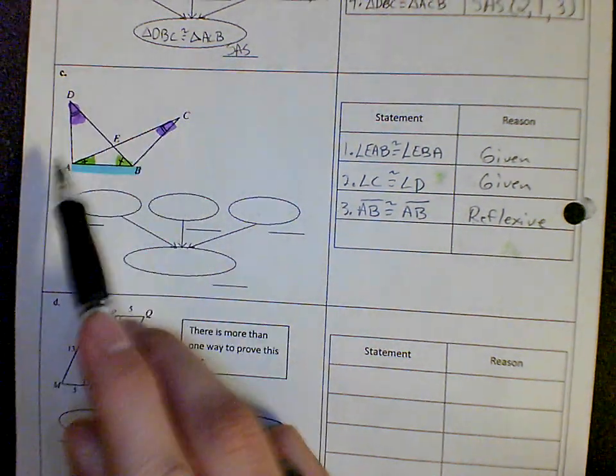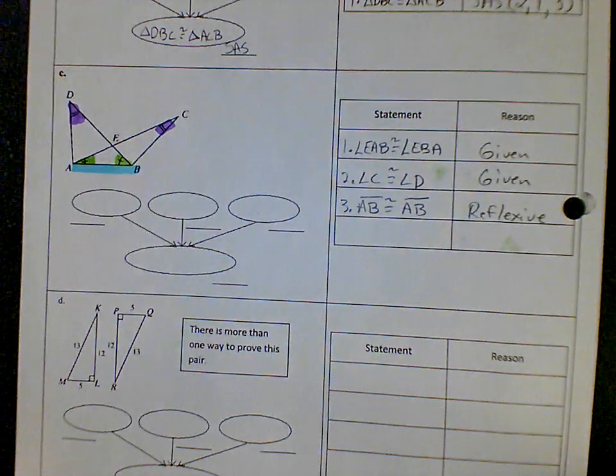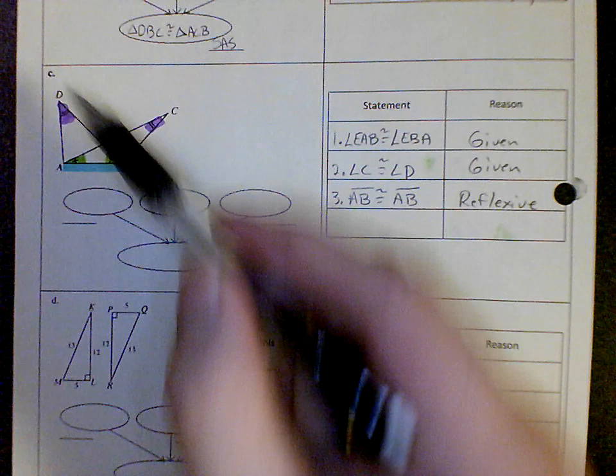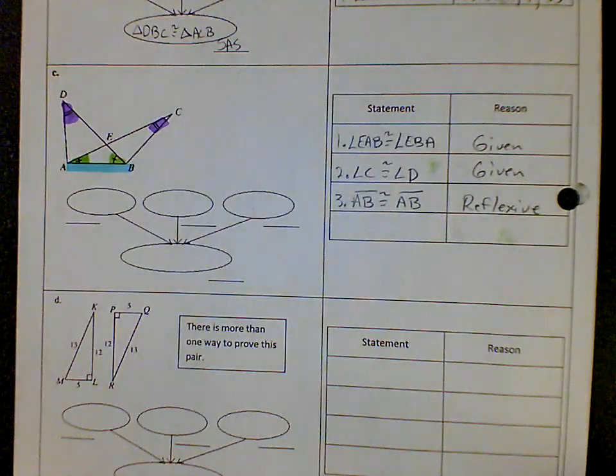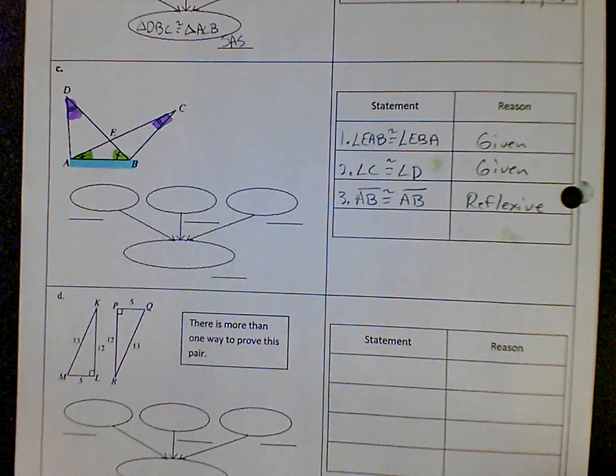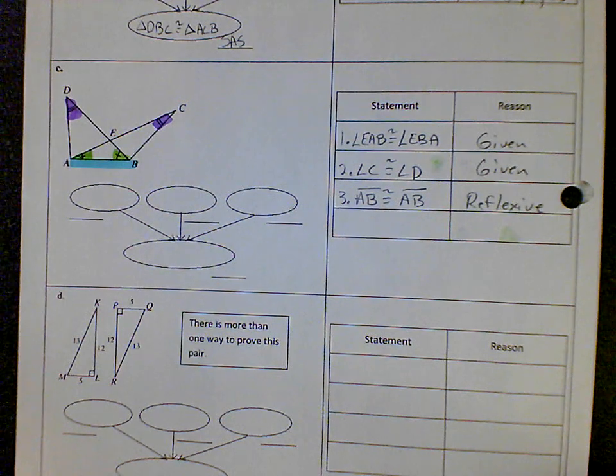And I have no information that AC is congruent to DB. So that's not going to help me. I've got no information that BC is congruent to DA. There's nothing I know that will prove those congruent. And so then my last thing is that AB is congruent to AB. And that I do know how to prove.